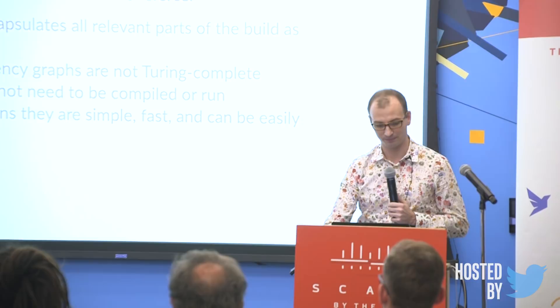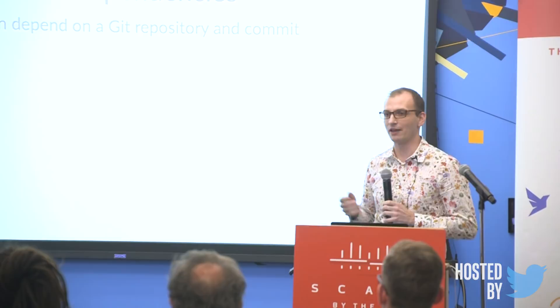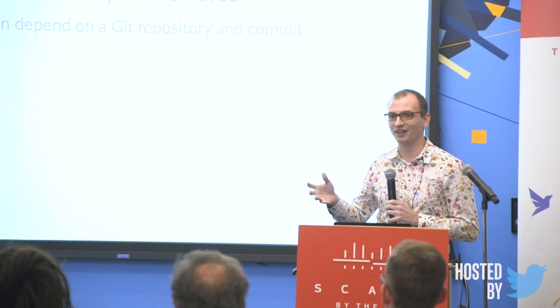There's some debate over whether source dependencies or binary dependencies work better, and there are pros and cons to both. I do prefer source dependencies, and I think if people started using Fury they would appreciate the advantages. This is also what Bazel does — source dependencies offer a lot more flexibility.